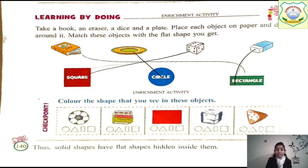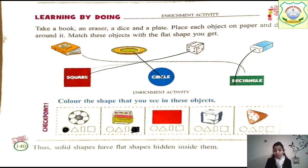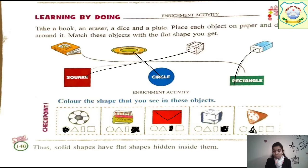After doing this, color the shape that you see in these objects. This round object — what shape does it become? Circle. You have to color that shape. You can use any color. Next, crayon — crayon is square box-like, so color the square. Next, this envelope — what shape is an envelope? Rectangle. So color the rectangle. Next, dice — dice is a cube — what shape is used in a cube? Square. So color the square shape. Next, cookies — what shape are the cookies? Triangle shape. Color the triangle.